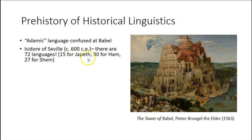In the 17th century, there were efforts to recover what the Adamic language was. It was believed to be either Hebrew or to be closely resembling Hebrew, and there were attempts to trace connections between all the other languages and Hebrew.